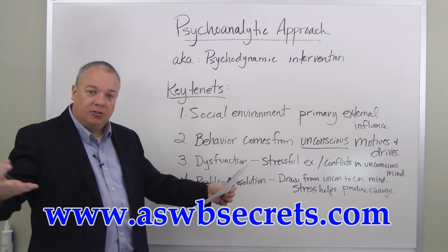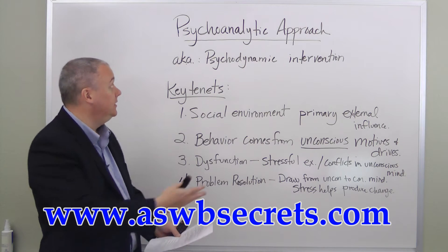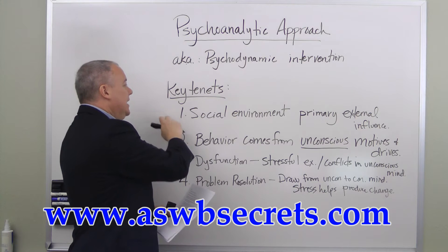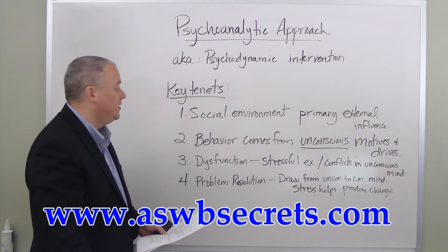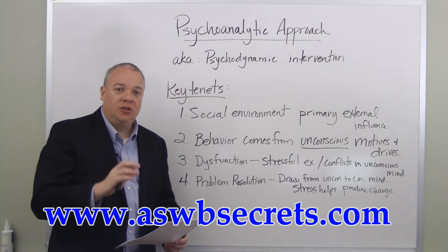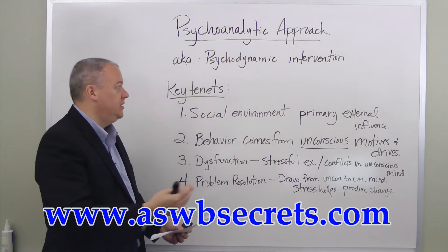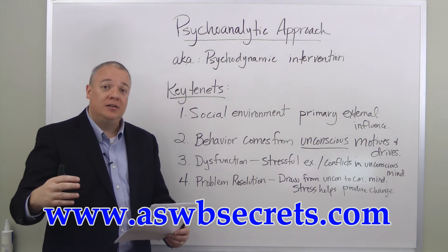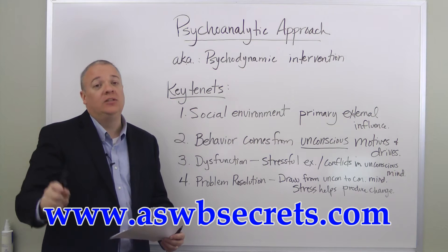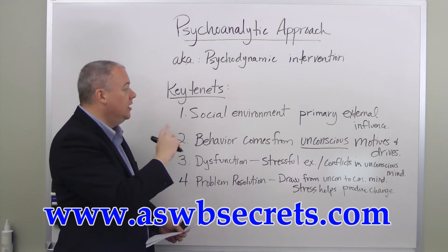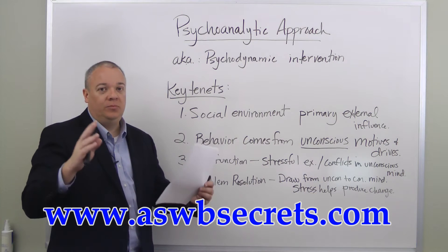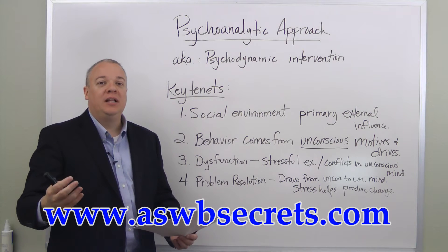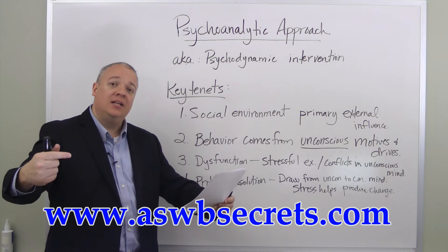The first key tenet is that the social environment in which the person exists is considered the primary external influence. Nothing is greater as an external influence than the social environment, so you must know the environment they're in and gather all the information you can to understand what external factors are feeding into the equation.